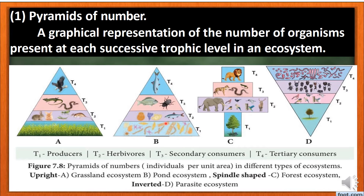Next is the pond ecosystem. In the pond ecosystem, we look at the first trophic level which includes phytoplankton.